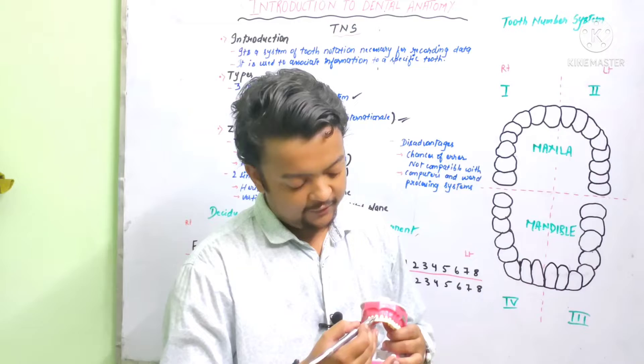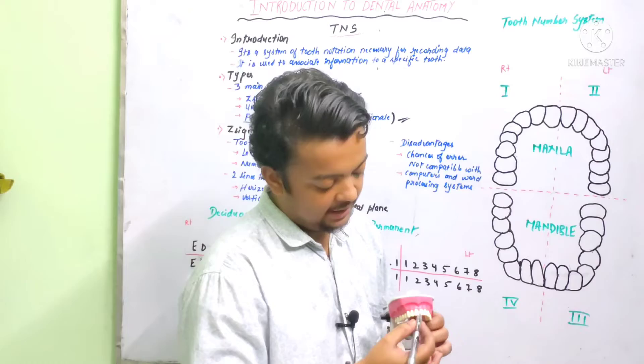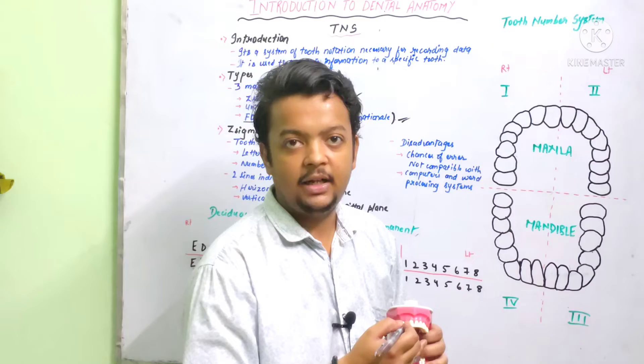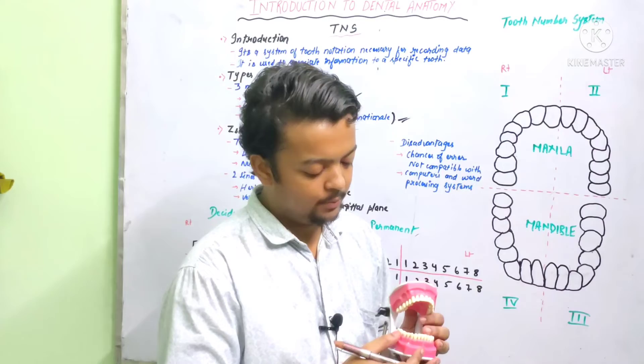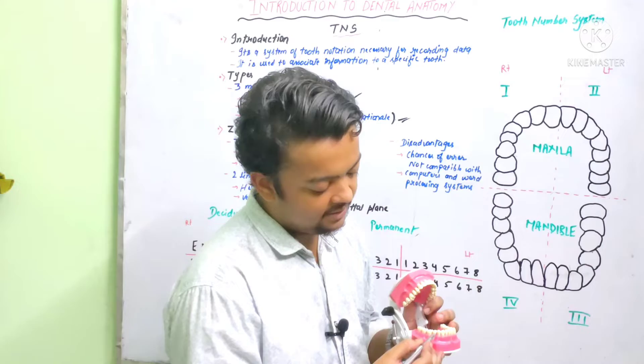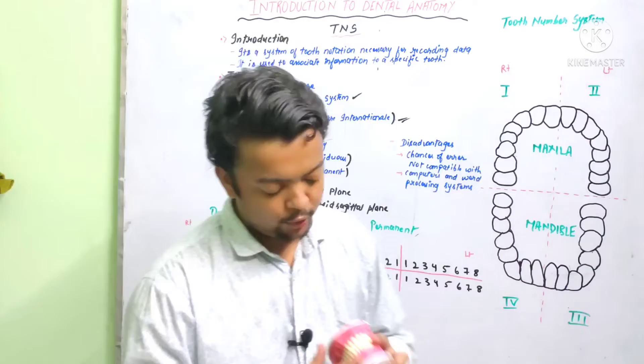A surface facing towards the midline is the mesial. So if this is the midline, this becomes the mesial surface. A surface facing away from the midline becomes distal. Now if I consider a tooth in the lower premolars, a surface facing towards the midline is the mesial, and this becomes the distal.